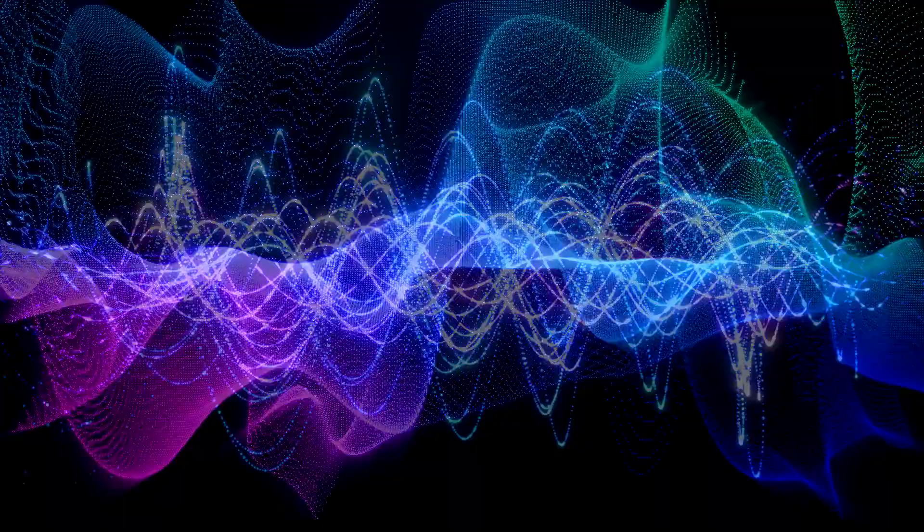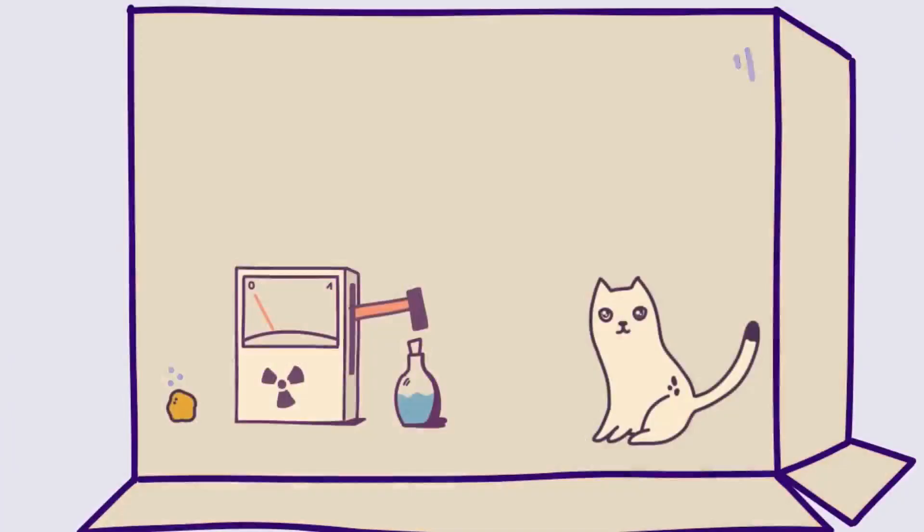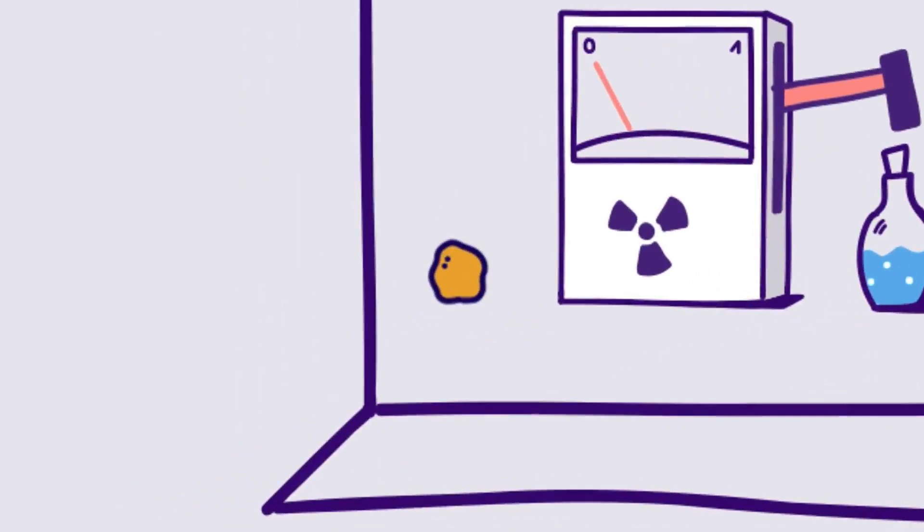Now let us begin the thought experiment. A cat is placed in a steel chamber along with a Geiger counter containing a small amount of radioactive substance. If the substance decays, it triggers a hammer that shatters a flask of hydrocyanic acid, killing the cat.